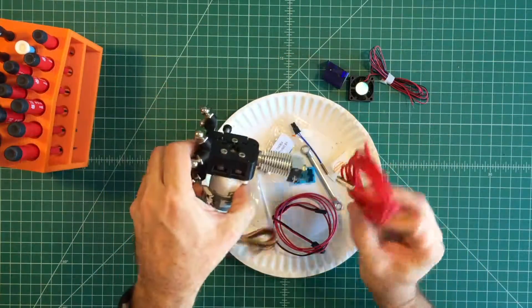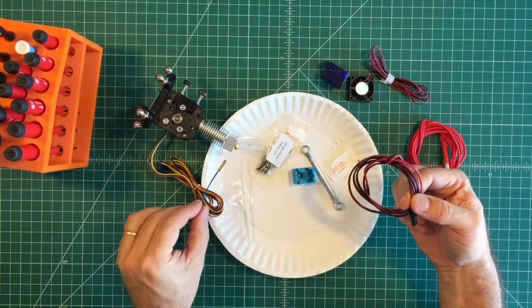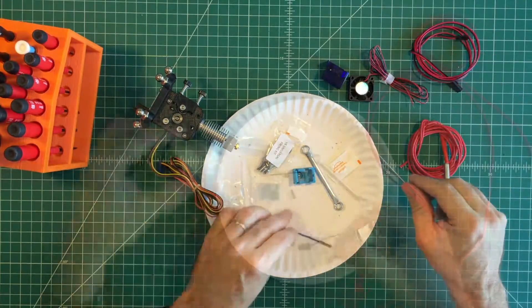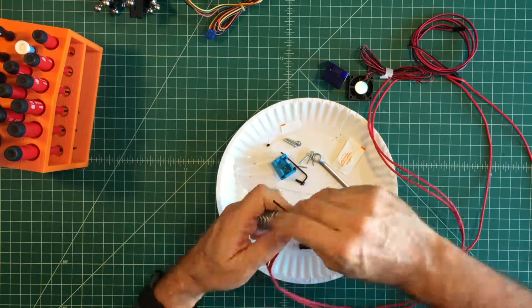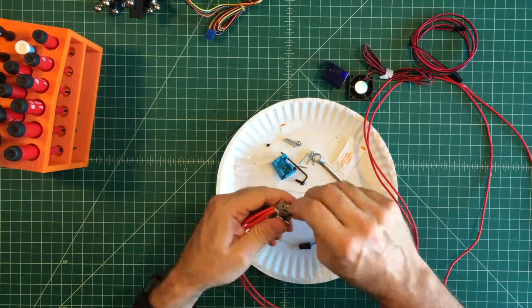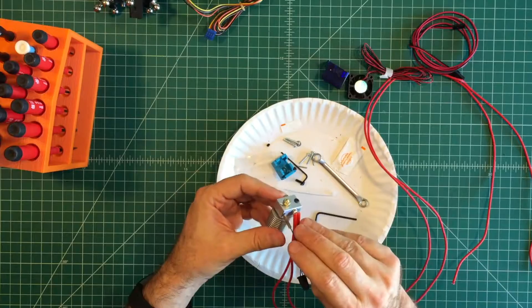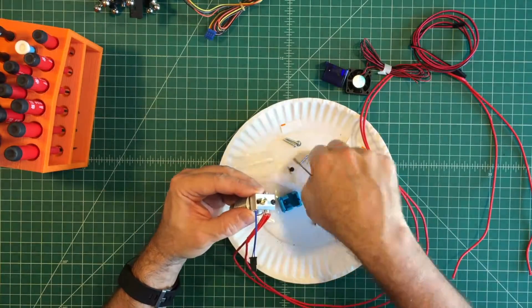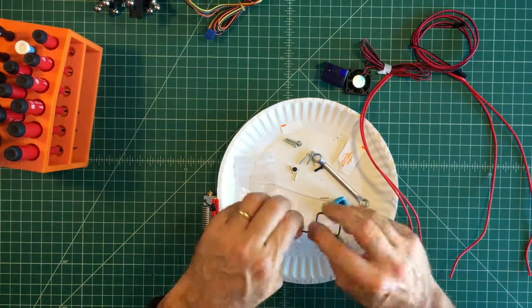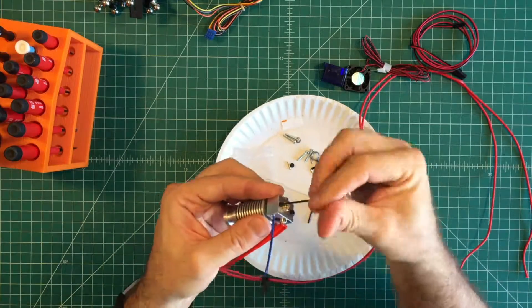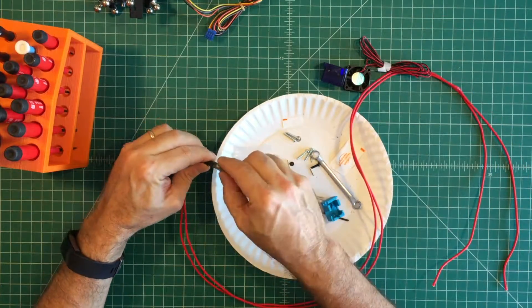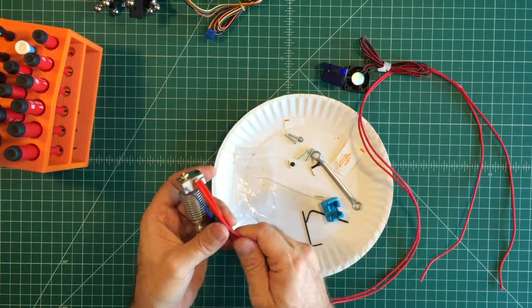Next, we will install the cartridge heater and cartridge thermistor. With the hotend removed, insert the cartridge heater and clamp with a M3x10 screw. Next, insert the cartridge thermistor and secure with an M3 set screw. Clip the thermistor lead wire to the thermistor connector.